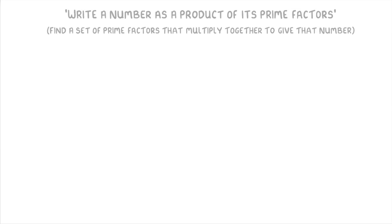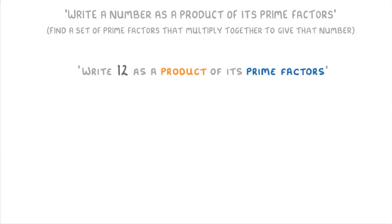When you get questions about this sort of topic in the exam, they'll normally ask you to write a number as a product of its prime factors. What they mean by this is that they want you to find a set of prime factors that multiply together to give that number. So if we were asked to write 12 as a product of its prime factors, we'd need to come up with a set of numbers that multiply together to make 12. We already know that 2 and 3 are prime factors of 12, but we can't just write 2 times 3, because 2 times 3 is 6, not 12.